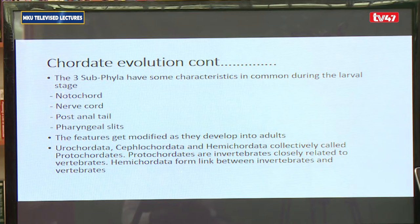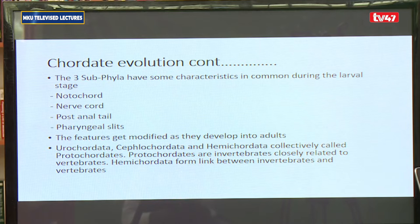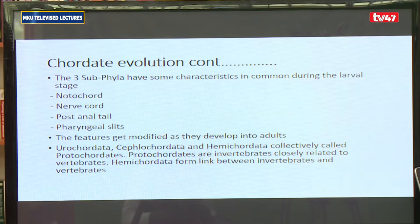For the three subphyla in phylum chordata, they have certain common basic characteristics when they are in the larval stage. The basic characteristics that they share in the larval stage — all of them, both the urochordata, cephalochordata, and vertebrata — they have a notochord, they have the nerve cord, they have the post-anal tail, and they also have pharyngeal slits. Pharyngeal slits are basically spaces found in the pharynx area that give rise to other structures formed later on.